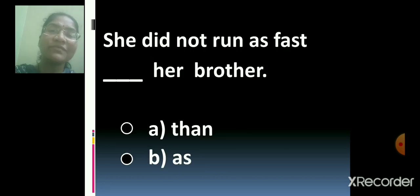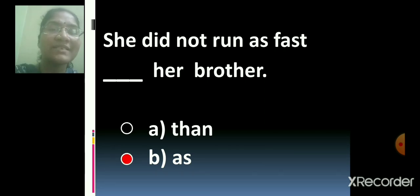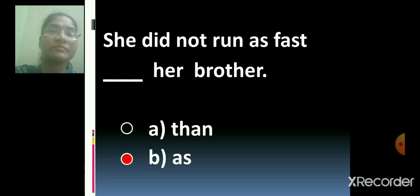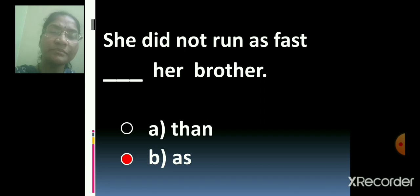She did not run as fast dash her brother. She did not run as fast than her brother, or she did not run as fast as her brother? Come on. Yes, B is the correct option. Very good. She did not run as fast as her brother. Now repeat after me. She did not run as fast as her brother. She did not run as fast as her brother.